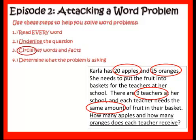By circling those things I am able to do the next step, which is determine what the problem is asking of me. I can see in my head the 9 little baskets lined up for the teachers, each with fruit in them. I can see the box of fruit next to them with 20 apples and 25 oranges. I've got an idea of what's going on.